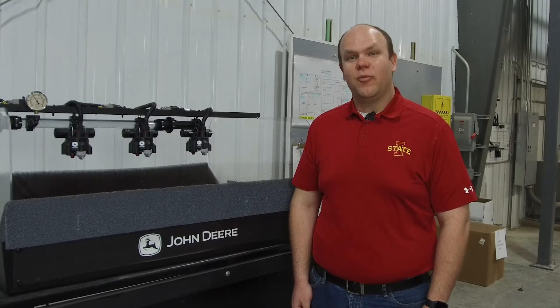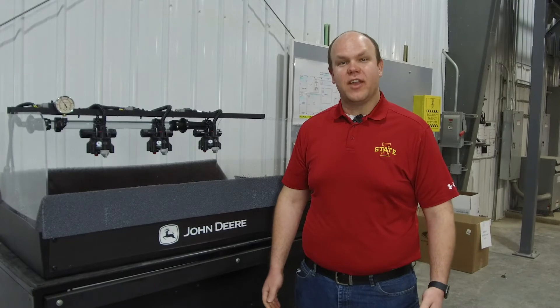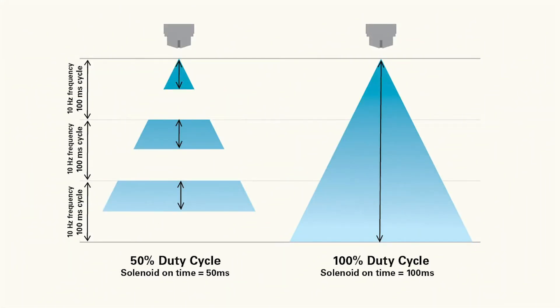PWM systems effectively give you the ability to get multiple nozzle sizes out of a single nozzle that's installed on your spray boom. This is done by operating the solenoid at different duty cycles to achieve varying flow rates out of the nozzle while still maintaining pressure across the boom. For example, a number six nozzle operating at 40 psi at 100% duty cycle — with the solenoid completely open like a normal spray system — will give you about 0.6 gallons per minute out of that nozzle. However, that same number six tip operating at 40 psi and a 50% duty cycle will effectively give you a number three nozzle, outputting about 0.3 gallons per minute while still maintaining 40 psi across your boom.